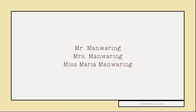Next, we have Mr. Manwaring, Mrs. Manwaring, and Miss Maria Manwaring. One thing worth noting — spoilers for this several-hundred-year-old book — is that Mr. Manwaring is actually not a good person. He's stepping out on his wife, Mrs. Manwaring. This comes in a little bit later on, but we also have to keep in mind that the gentry don't have a lot of issues they have to deal with on a regular basis.